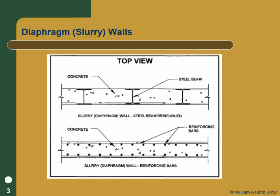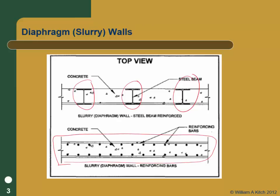Diaphragm walls are basically reinforced concrete walls. You can have H or W sections with concrete placed between them, but that's generally inefficient in terms of flexural strength per amount of steel, so it's not commonly done anymore. More commonly, you design a standard reinforcing cage — essentially a beam. The cages tend to be symmetric on both sides because you need a square symmetric cage to pick it up and place it in the hole, so it ends up being a doubly reinforced beam.